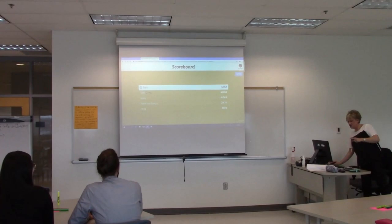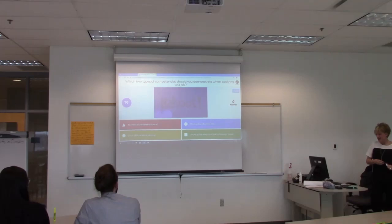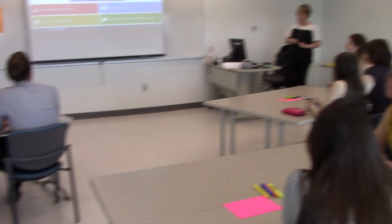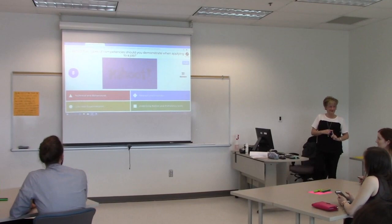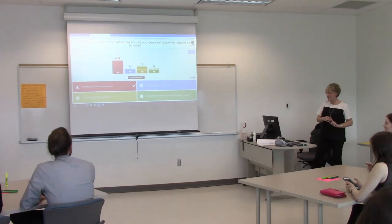Which two types of competencies should you demonstrate when applying to a job? Technical and behavioral; abstract and concrete; core and organizational; or underlying notion and proficiency scale? Almost all of you got it right: technical and behavioral. A few answered core and organizational — those are the bigger, broader ones that aren't so job specific.